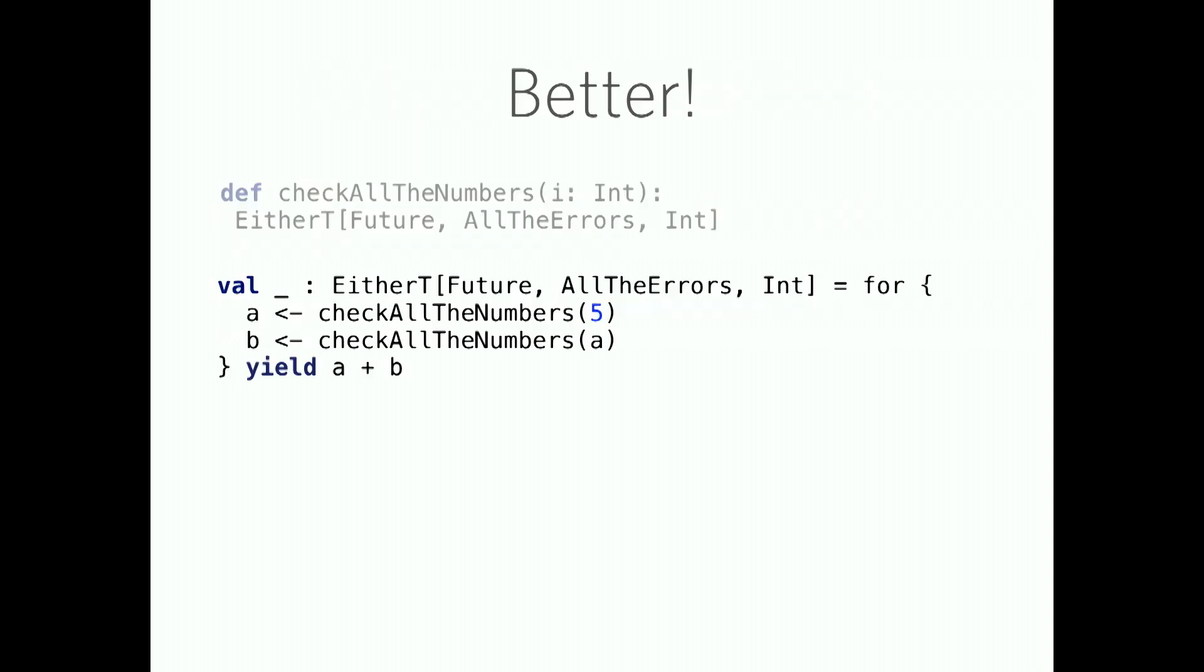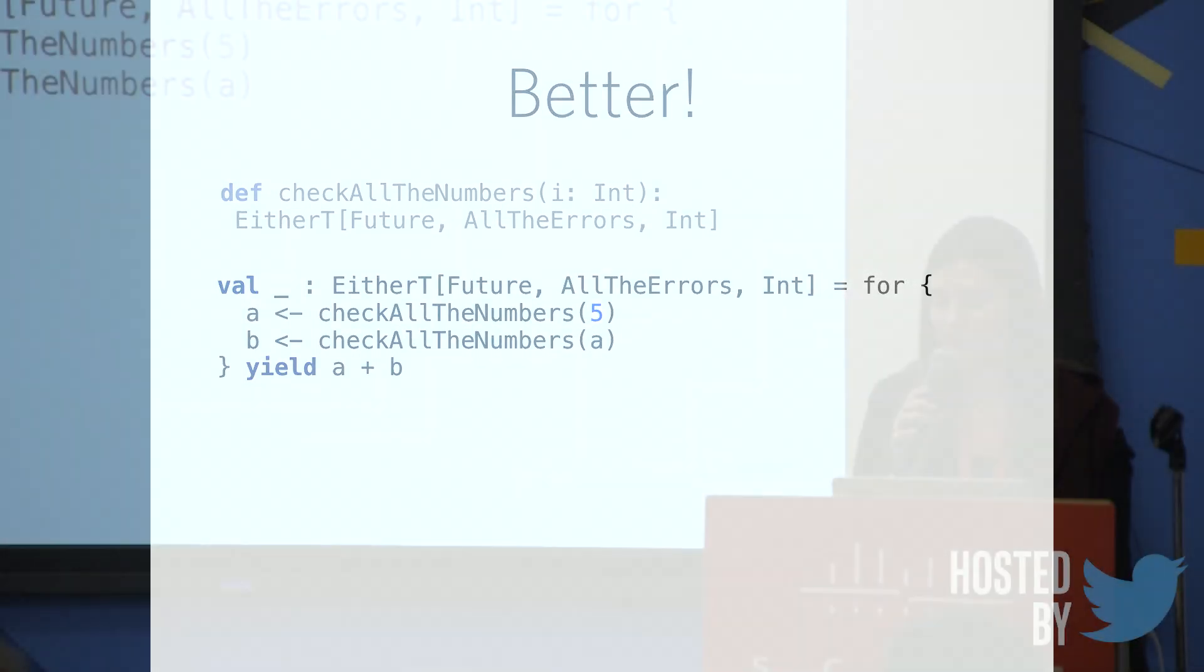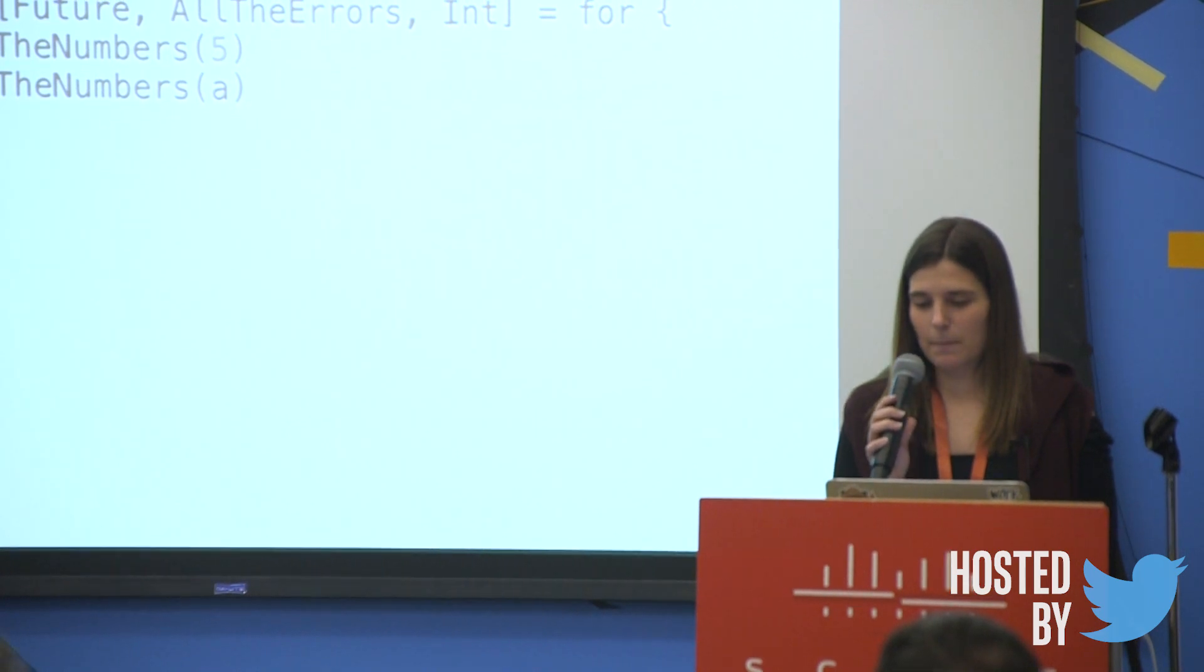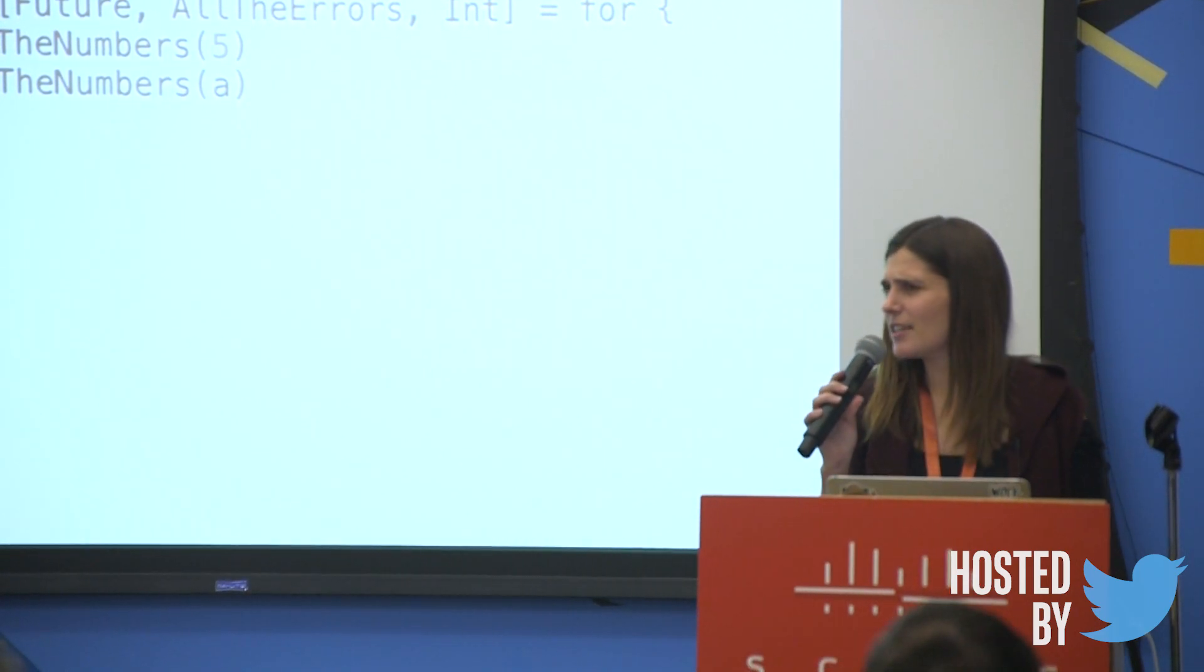So, that example from a few slides ago that was a future of either of a right of another future of another right or whatever it was, that would have been really not that useful for us. This example is probably what we were trying to achieve there. We're using, we're doing a check. We're using the results of that check to do another check, and we're yielding the value. However, this gives us something that is much easier to read. We just sort of end up with an either T of a future of all the errors of int. And it gives us something that's actually kind of useful to use.